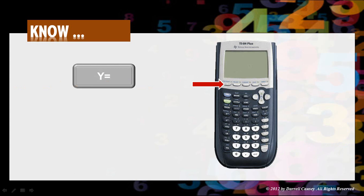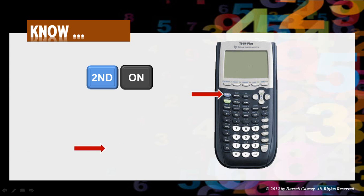Y equals for using functions. And second and on will give you off. So there's our first sequence.